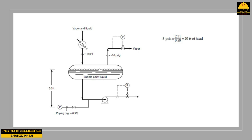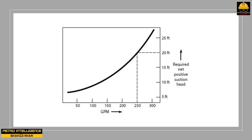The 20 feet matches the level of liquid in the drum above the suction line of the pump, and equals the available NPSH to the pump. The pump curve shows that at 250 GPM, the required NPSH of 20 feet equals the available NPSH of 20 feet. Therefore, at a flow rate of 250 GPM, the pump will cavitate.